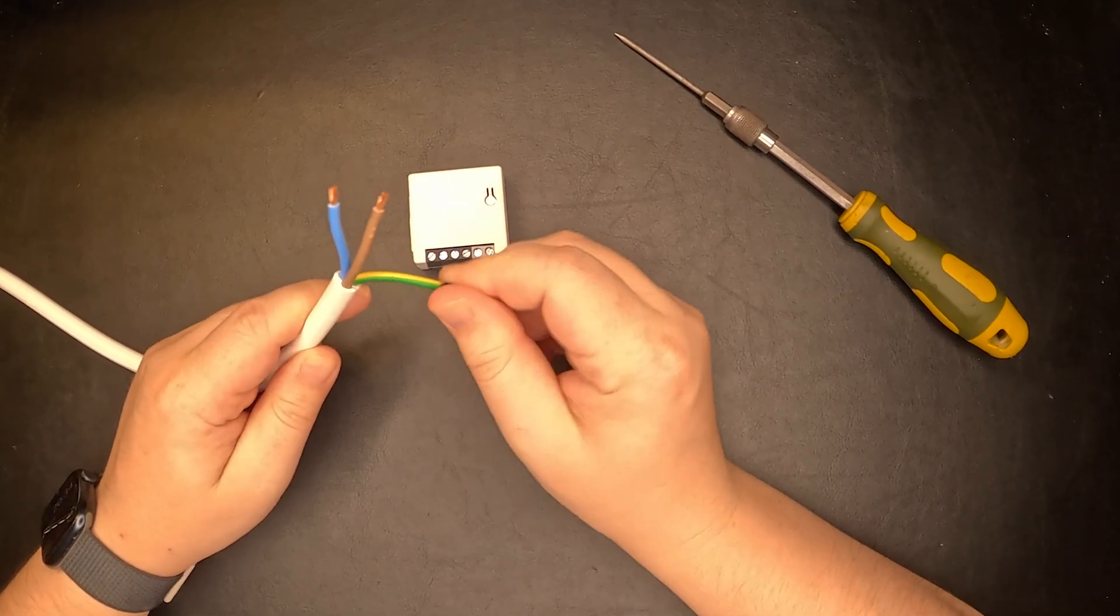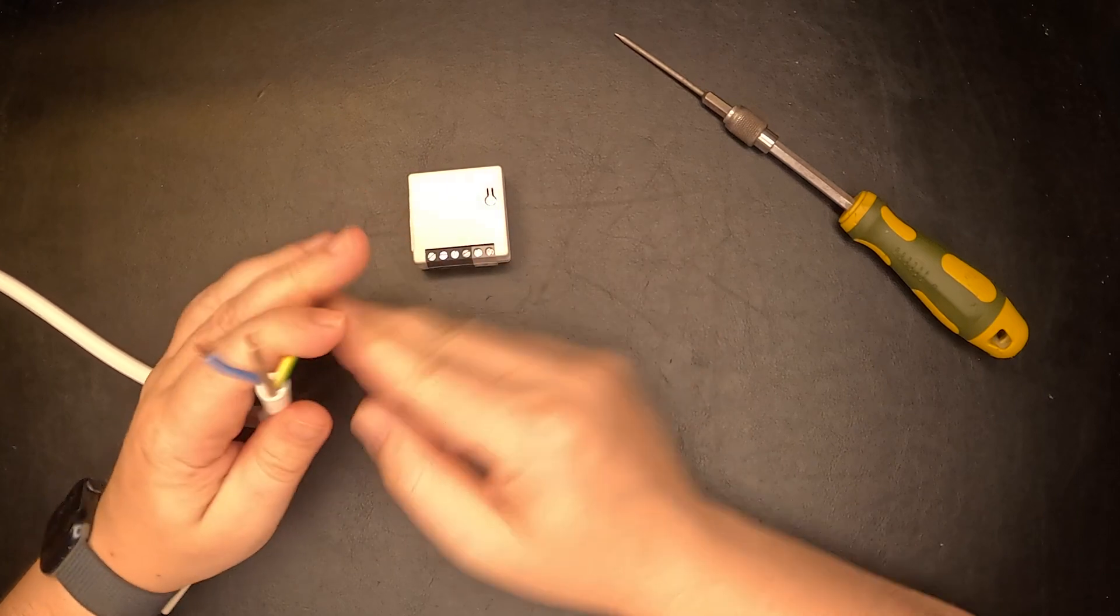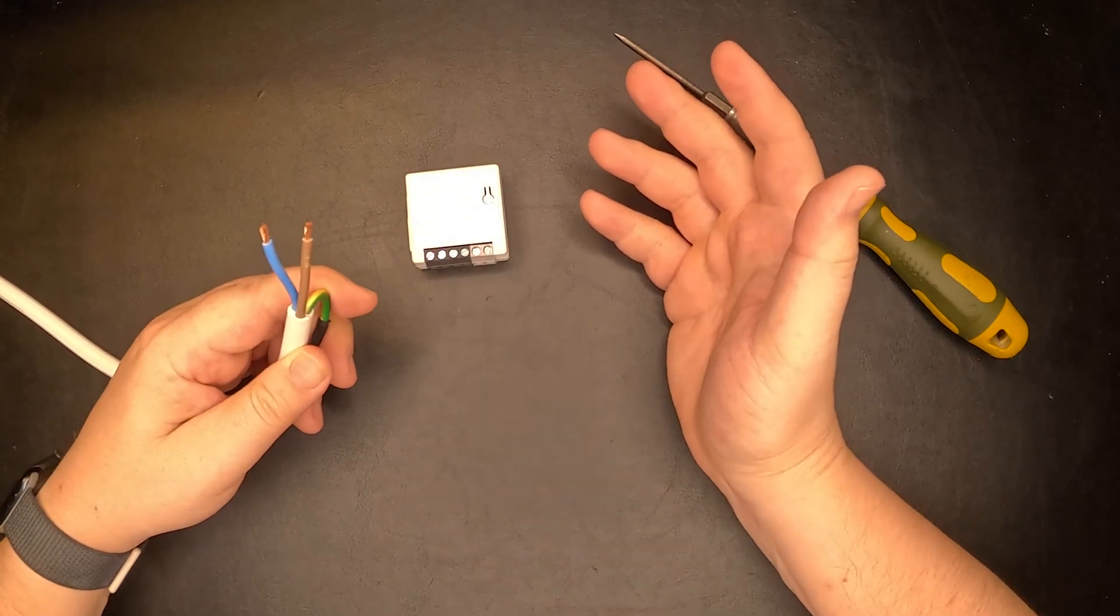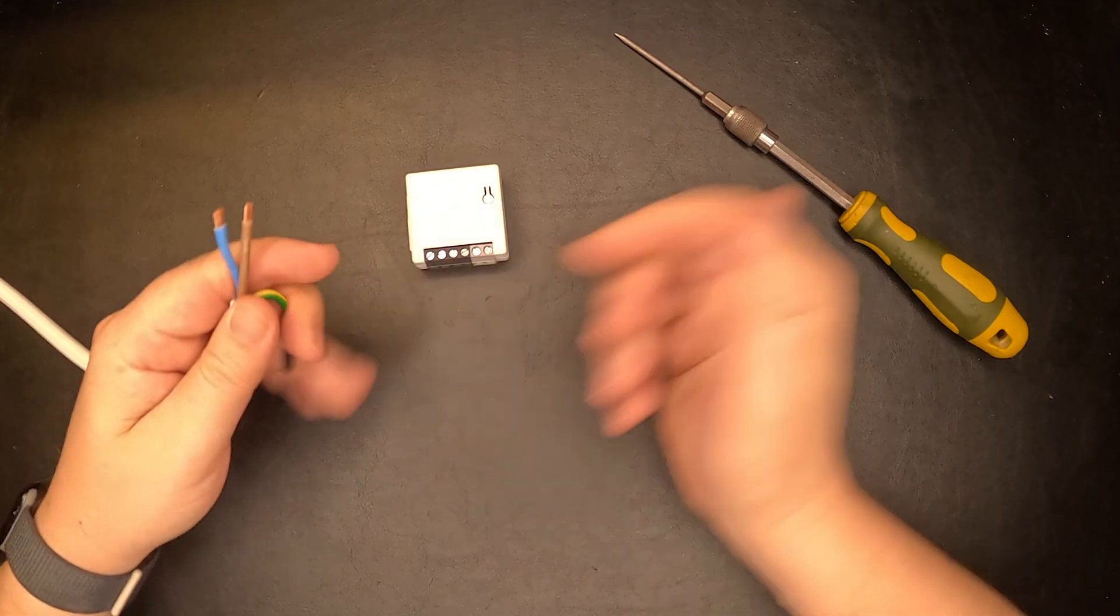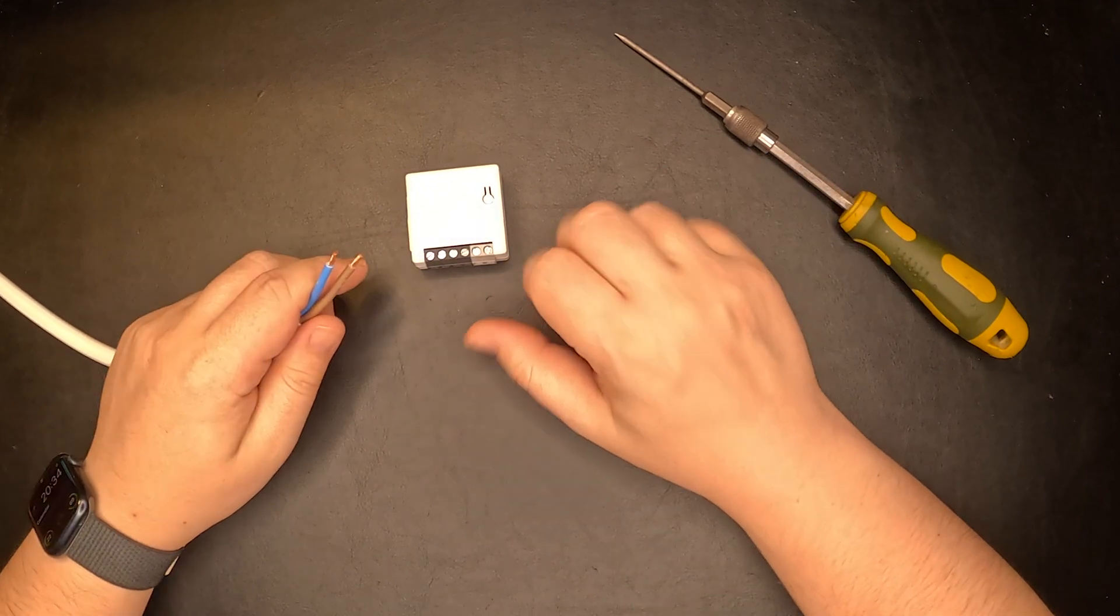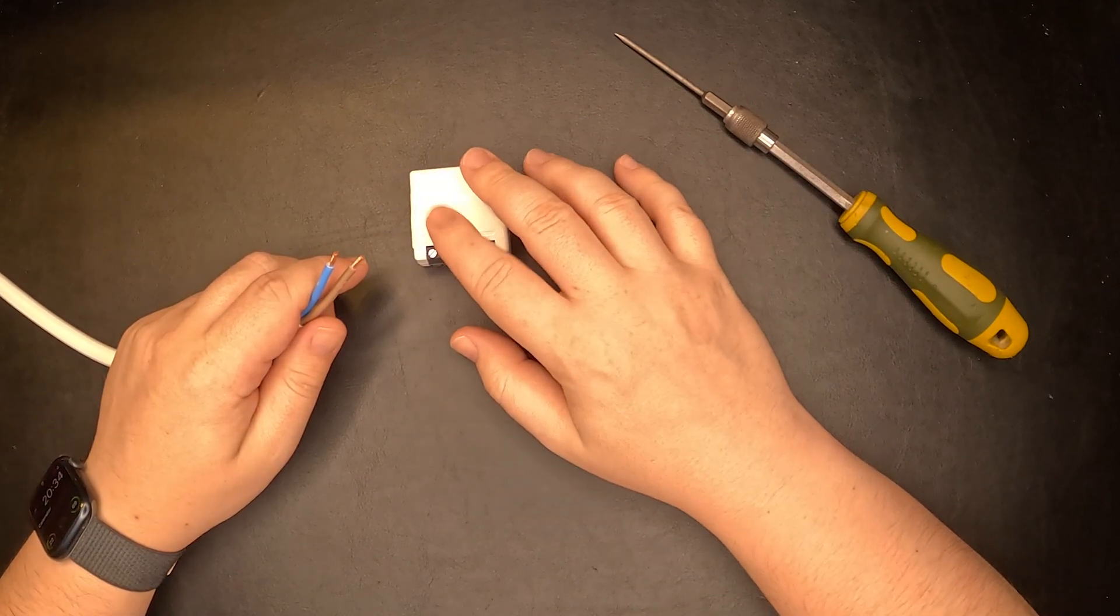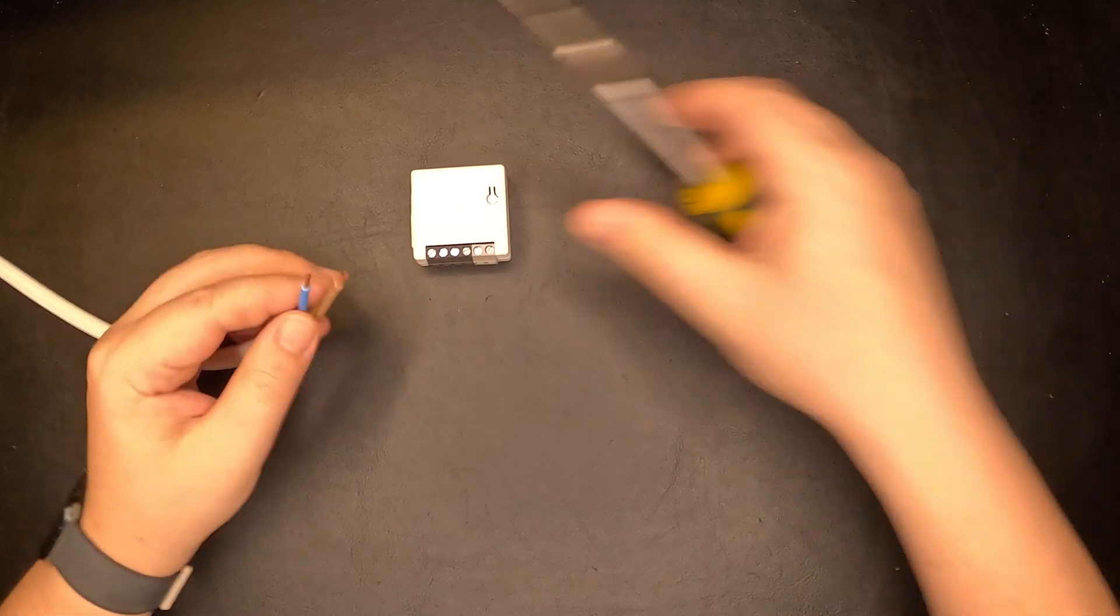This part is isolated. It is only ground. On the Sonoff ZB Mini, we do not have a location for the ground. I didn't have to put this here, but anyway. First thing first, we need to connect the neutral. The neutral will go on the first contact like this.